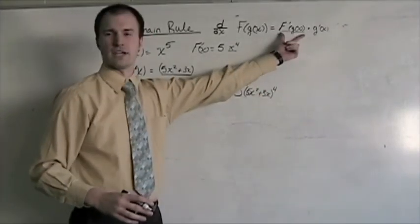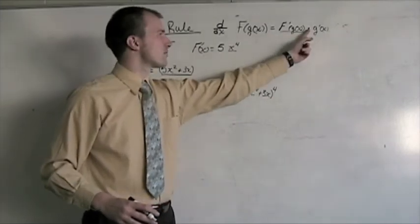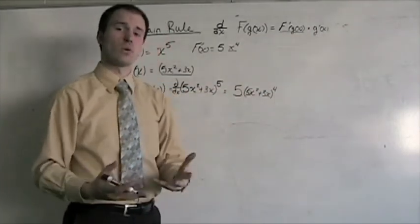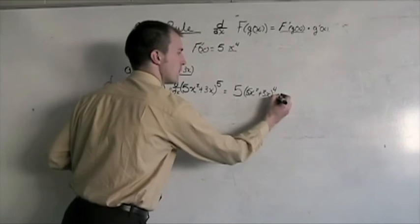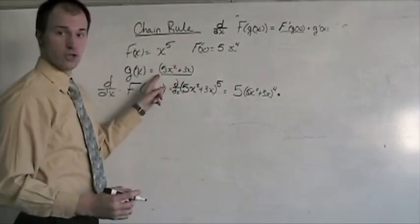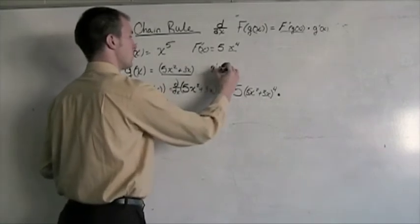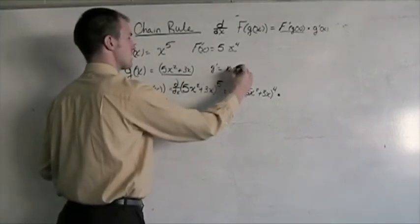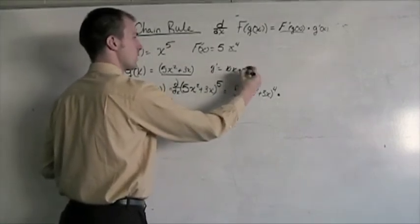So, that takes our entire first term here, and then we have to multiply that times the derivative of what's inside. And the derivative of what's inside is actually g prime of x.